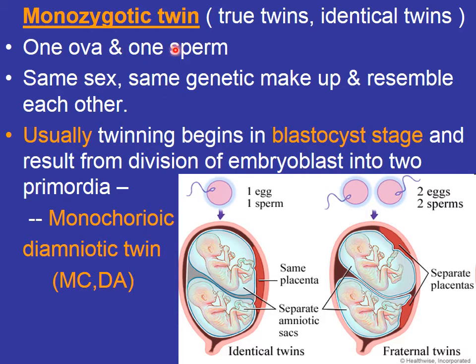The other type is monozygotic twins, also called identical or true twins. In this case, one ovum is fertilized by one sperm, so both babies will be of the same sex. As they develop from one zygote, they have the same genetic makeup and resemble each other in genetic composition as well as physical appearance — almost 100% resemblance, though later development may show some differences.